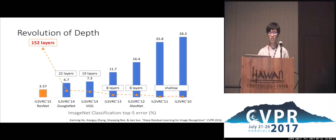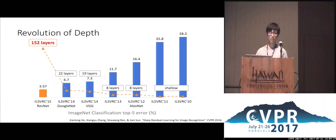After two years, we saw another significant improvement by VGG and GoogleNet, which significantly increased the depth from about eight layers to over 20 layers. Two years ago, in 2015, the deep residual network again significantly increased the depth to over 100 layers, and we saw another improvement in accuracy.